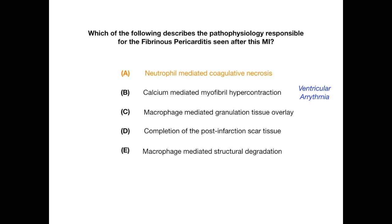Choice C, macrophage-mediated granulation tissue overlay, is responsible for free wall rupture. When granulation tissue is laid down and the scar begins to form, you're acutely weakening the wall, which can cause it to rupture. Choice D, completion of the post-infarction scar tissue, is responsible for a true mural thrombus — that scar tissue becomes a nidus on which a thrombus can build in the mural area.